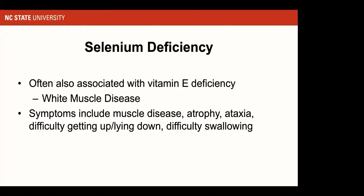Regarding selenium deficiency, the primary condition is white muscle disease — though primarily thought of as a selenium deficiency disease, vitamin E deficiency contributes as well. Both deficiencies are believed to contribute to white muscle disease. Affected horses develop atrophy, incoordination, difficulty getting up and lying down, and difficulty swallowing. We see this in horses with decent vitamin E status but low selenium, or with marginal intakes of both nutrients.